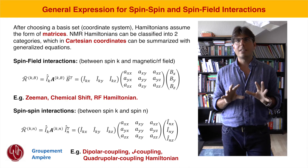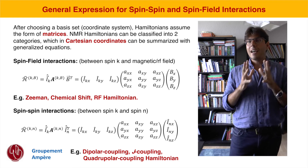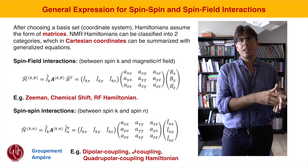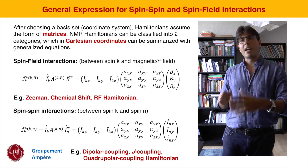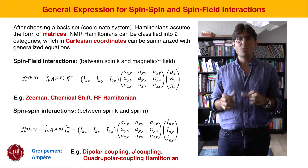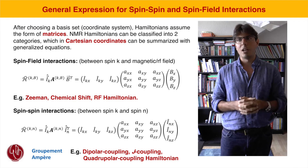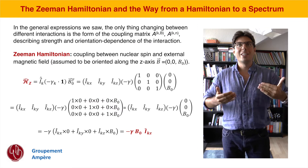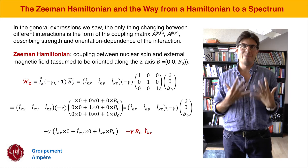For spin-spin interactions it's not very different: you take a spin operator, multiply it by the coupling matrix, and then multiply it by the spin operator of the second spin. Examples of spin-spin interactions are the dipole coupling, the J coupling, and also some quadrupolar coupling. Let's look at the most simple example we can have: the Zeeman Hamiltonian.